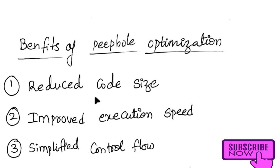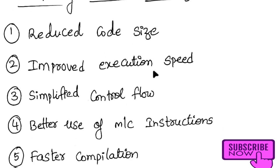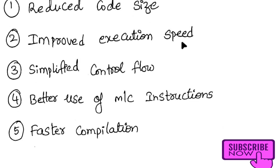The benefits of peephole optimization are: reduced code size, improved execution speed, simplified control flow, better use of machine instructions, and faster compilation. When the size of code is reduced, execution speed improves. This is all about the peephole optimization technique. Thank you for watching this video — please subscribe to my channel. Any doubts, you can ask me. Thank you, bye.